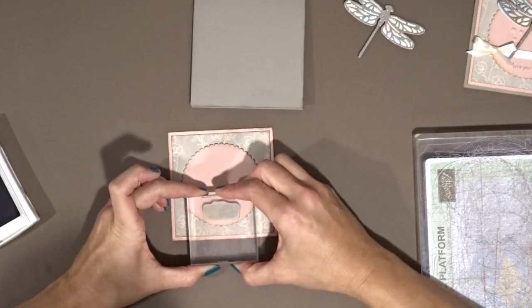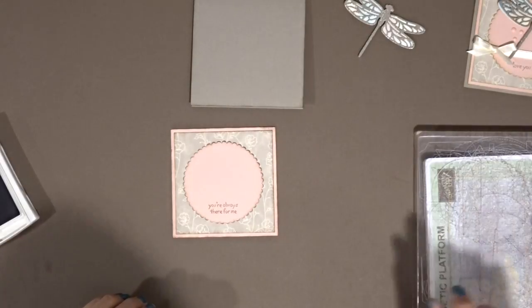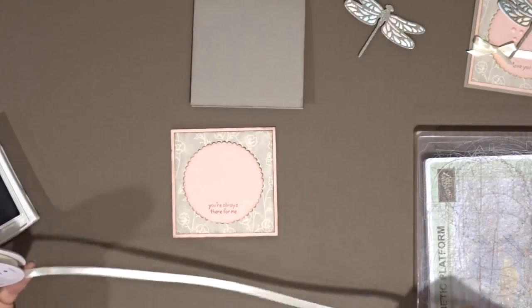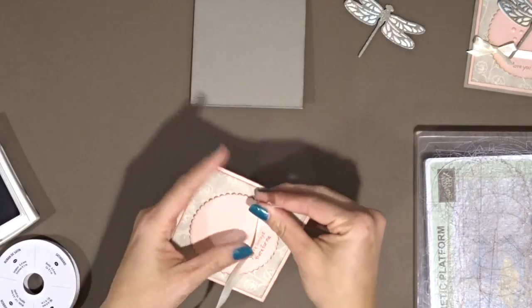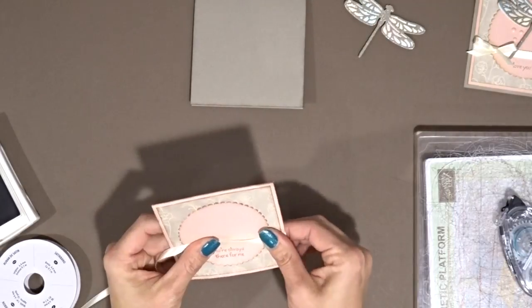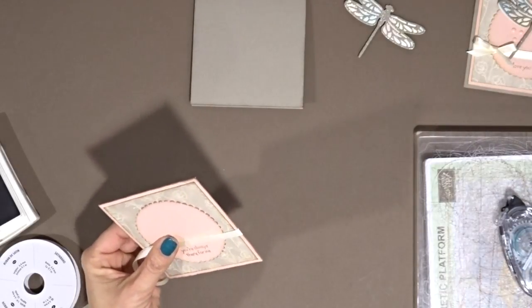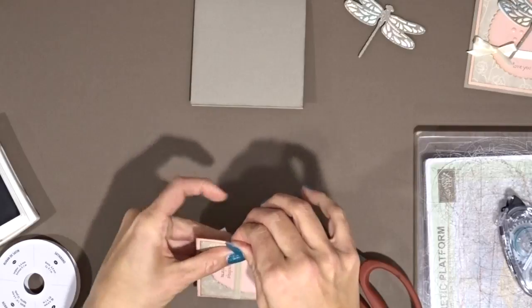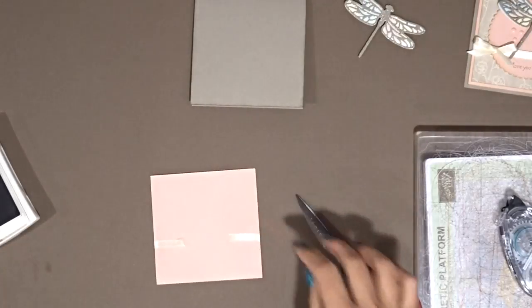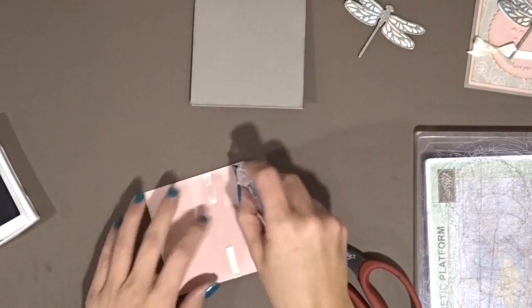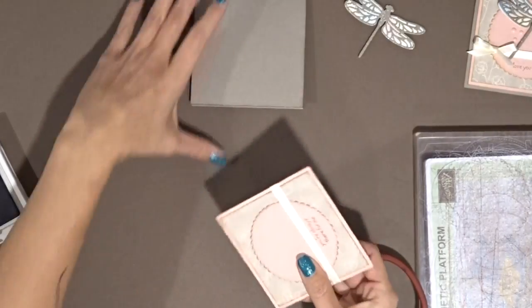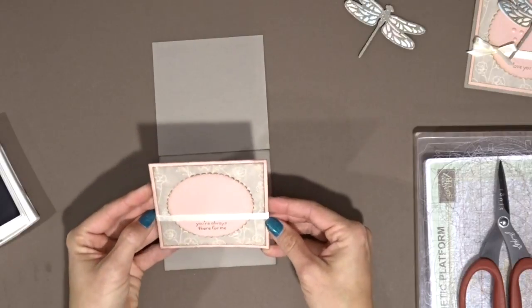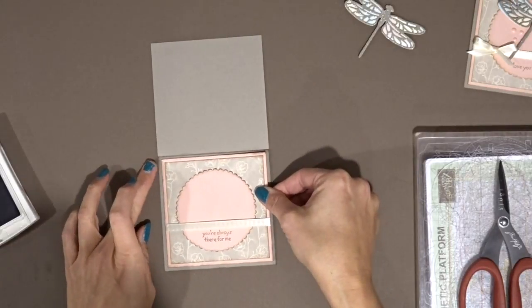And grab some ribbon and I'm just going to kind of put that right up above where the sentiment is. Wrap that around. Then I'm going to attach it to my card base just like that. Make sure that's straight. So it feels a little off to me but I'm sure it's fine.